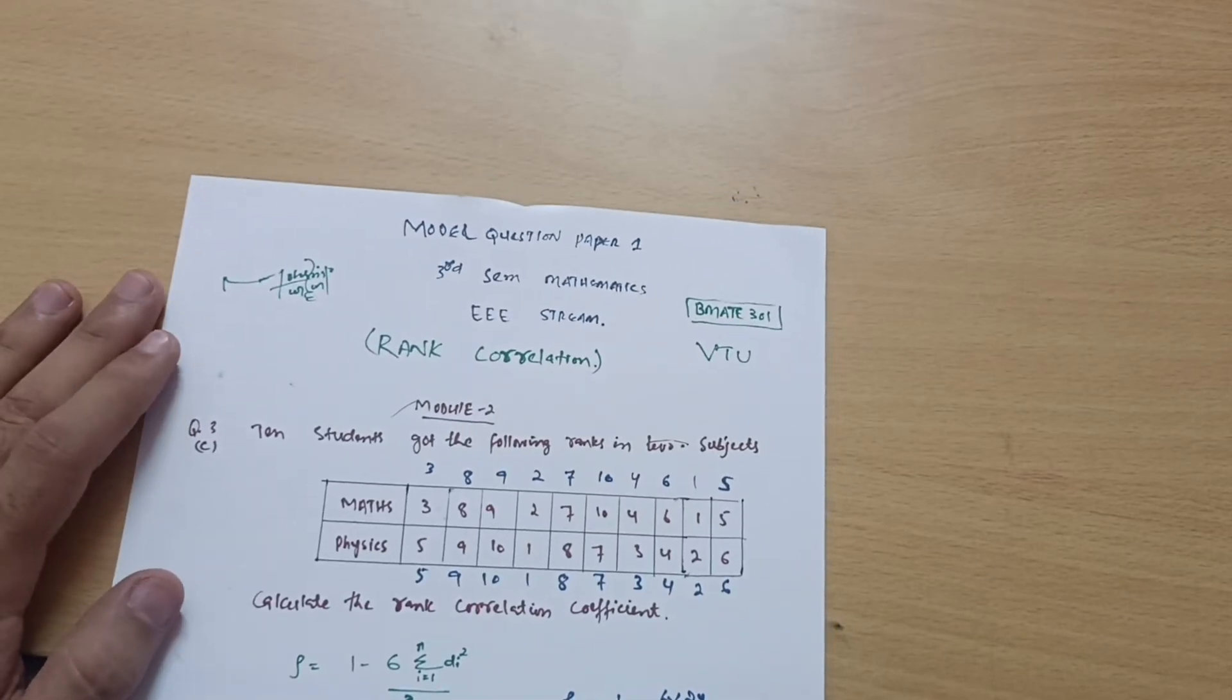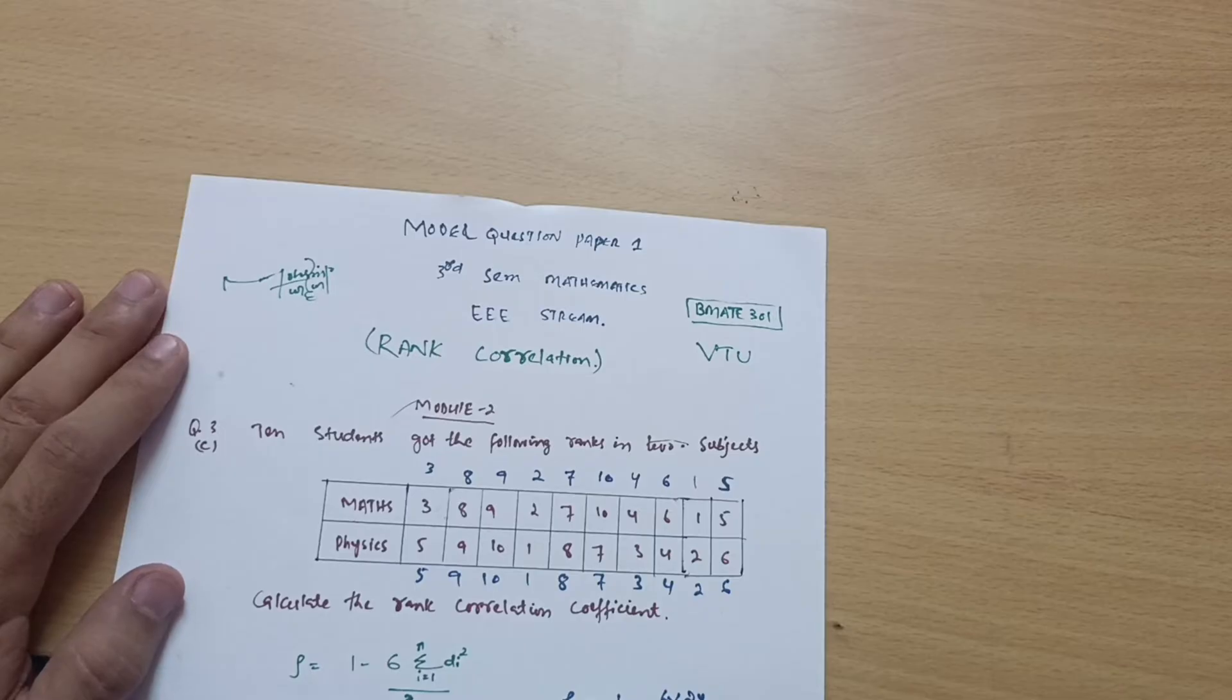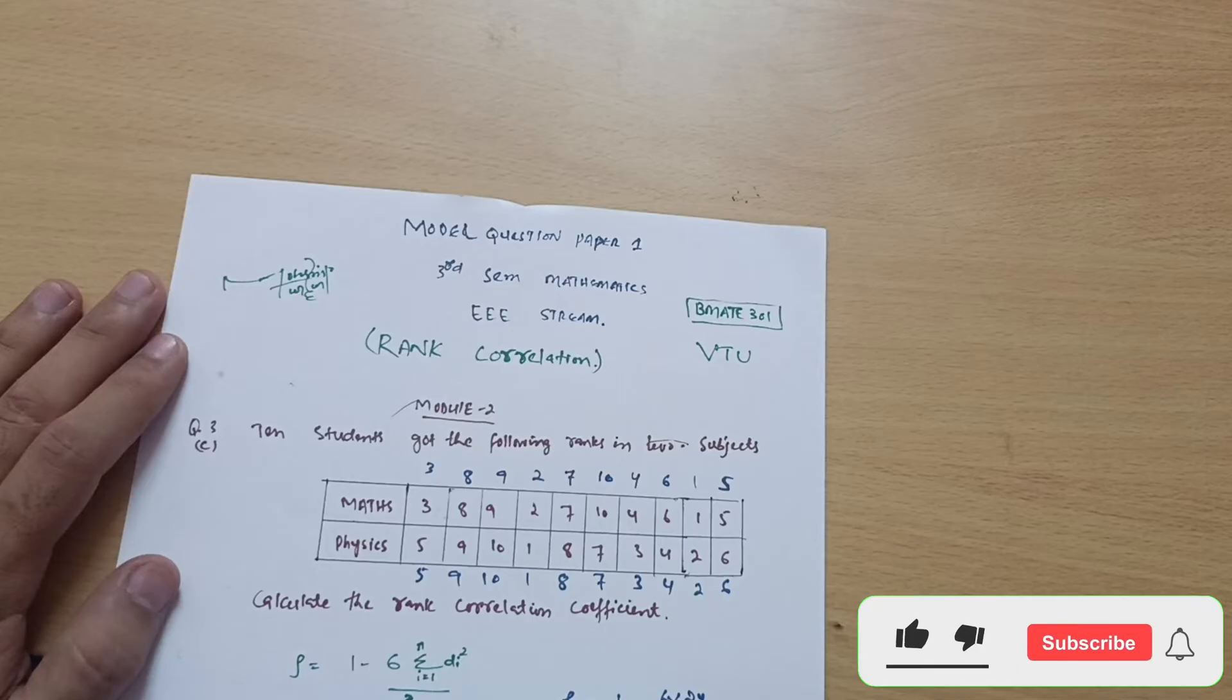Hello everyone and welcome back to my channel. Hope you are all doing well. We are discussing the module question paper for the mathematics subject for Triple iSTEM students. Today we will discuss rank correlation and how to calculate it.